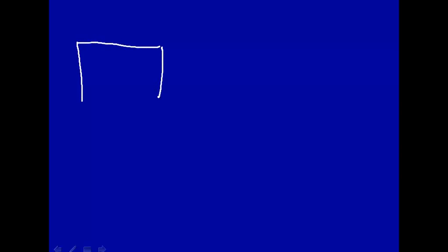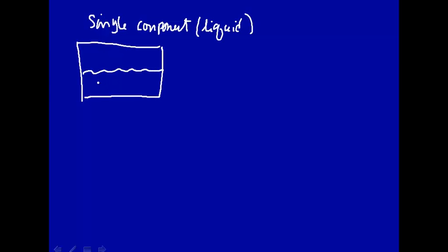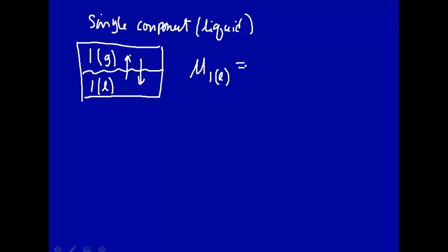Suppose we have a sealed system with a single component — we'll denote that with a subscript one — and this will be a liquid. As we know, at equilibrium the liquid will be in equilibrium with the vapor; it will have a certain vapor pressure. Liquids usually have vapor pressure in the gas phase. So if we want phase equilibrium for a single system, remember we're going to reduce our degrees of freedom by one, so instead of a two-dimensional plane, we now have just a single line to follow. The chemical potential of component one in the liquid phase, at phase equilibrium, must equal the chemical potential of component one in the gas phase.